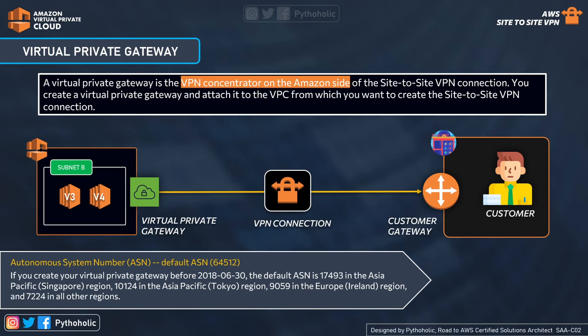ASN is an IP routing prefix used for controlling routing within a network and exchanging routing information with other internet service providers. They exist in both public and private forms. If you created your virtual private gateway before July 2018, the default ASN was 17493 in Asia Pacific Singapore, 10124 in Asia Pacific Tokyo, 9059 in Europe Ireland, and 7224 in all other regions. The current default ASN is 64512. When working with multiple VPCs, you need to create a separate virtual private gateway for each VPC and attach it.